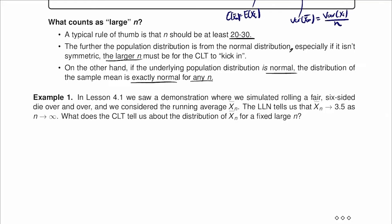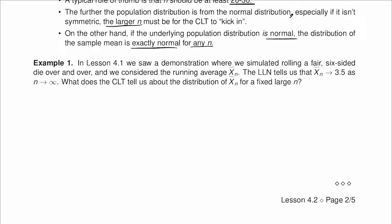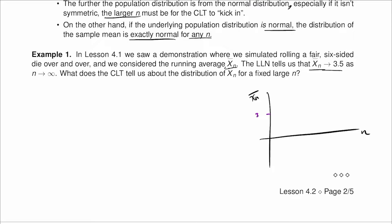Let's see some examples. In lesson 4.1, we saw a demonstration where we simulated rolling a fair six-sided die over and over and considered the running average at n — the sample mean. The law of large numbers tells us that this sample mean converges to 3.5 as n goes to infinity. We had the sample size on one axis and the sample mean on the other, and we saw that as n is large, this converges to the expected average of 3.5.